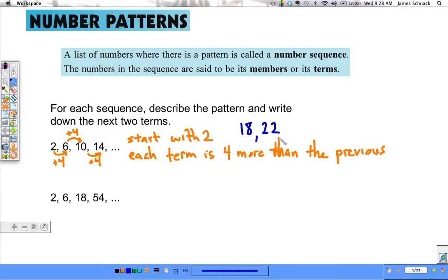Notice the second sequence. It starts out the same. Two, six, but then it's not ten. So it's not adding four consistently. We have to think of a different way to get from two to six.